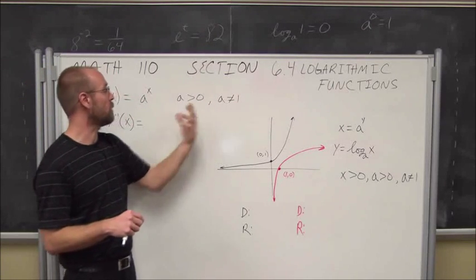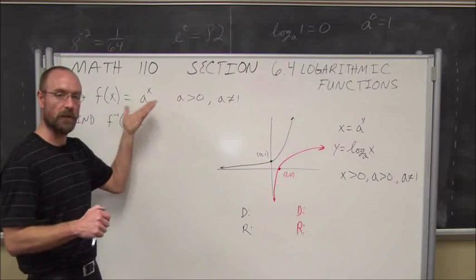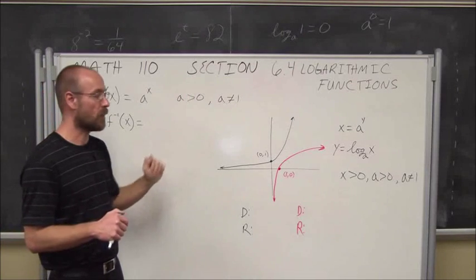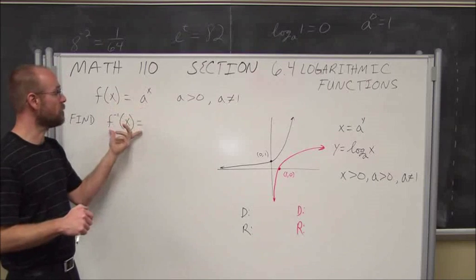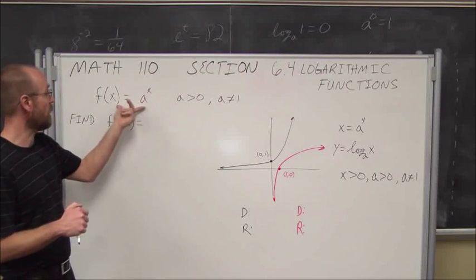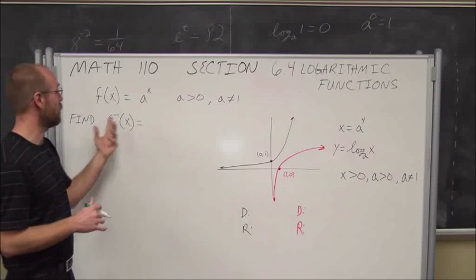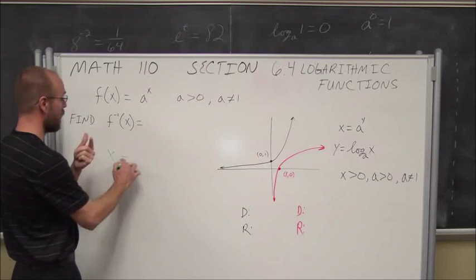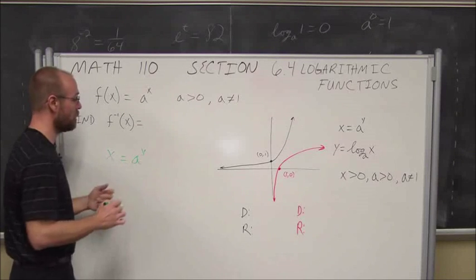And a cannot equal 1 because 1 to any power doesn't change. Our definition of an exponential function is constant growth or constant decay. If we want to find the inverse of this function, from an exponential to a logarithmic, we've explored finding the inverse — we replace our y value with an x and our x value with a y.